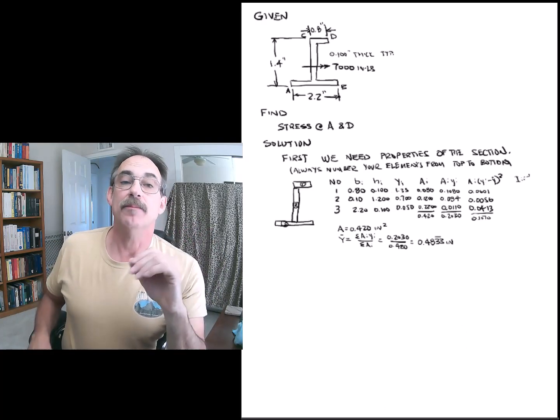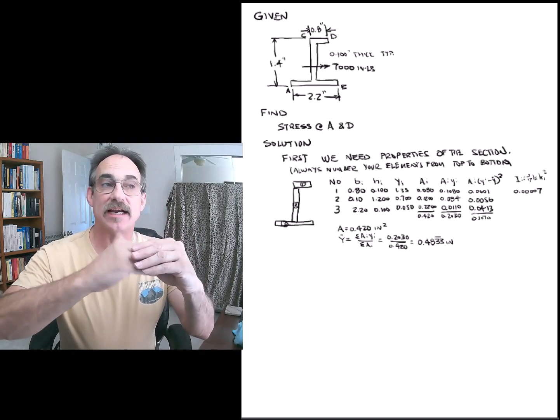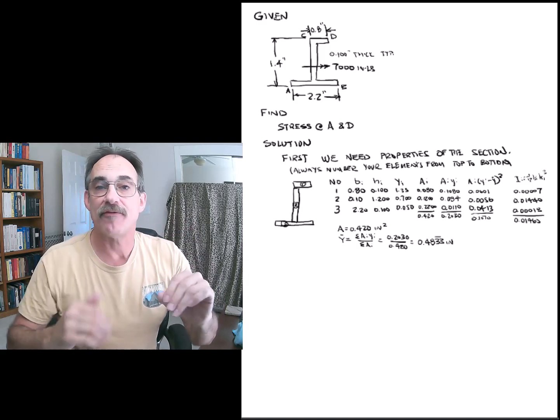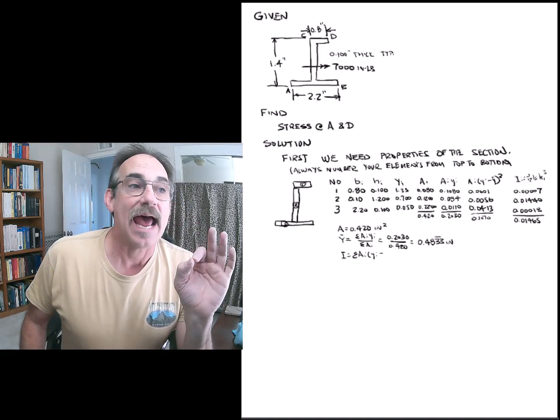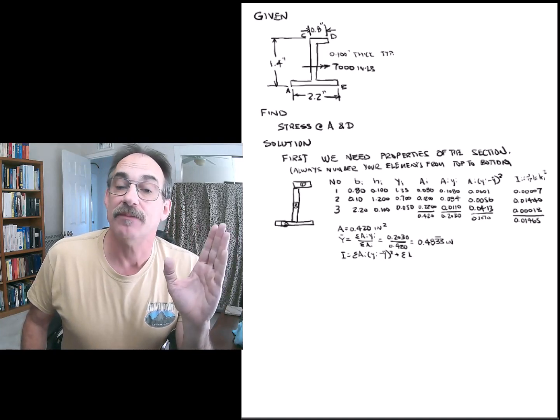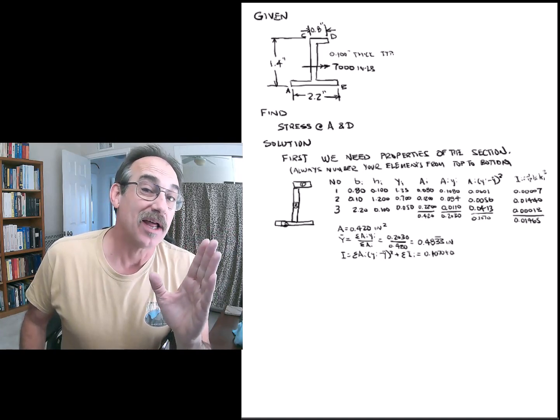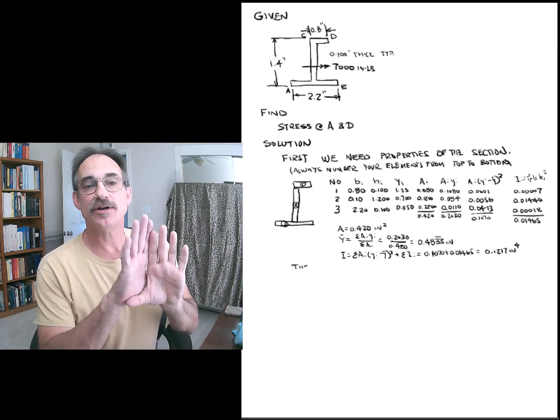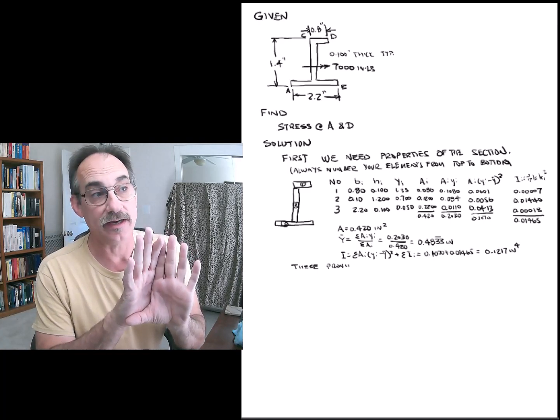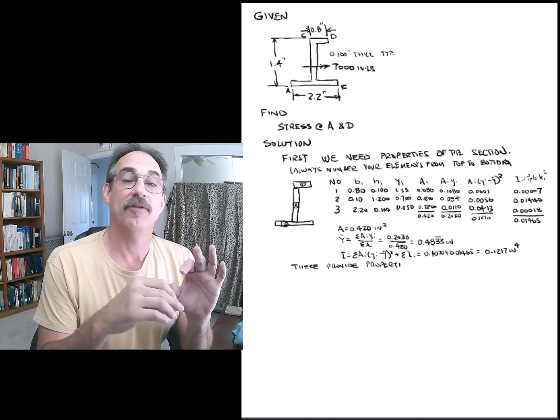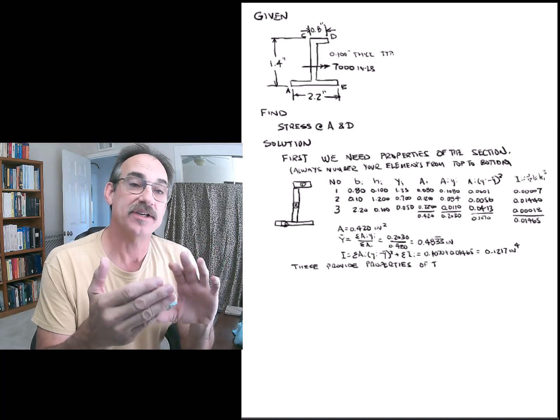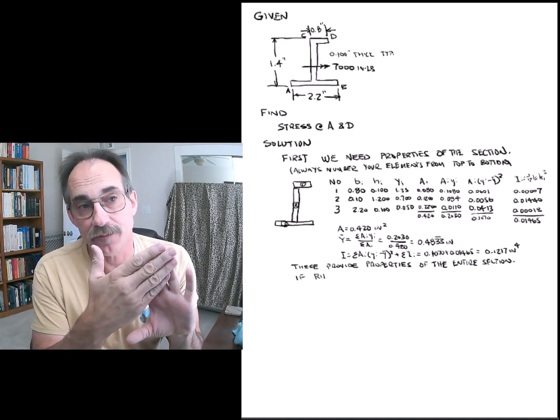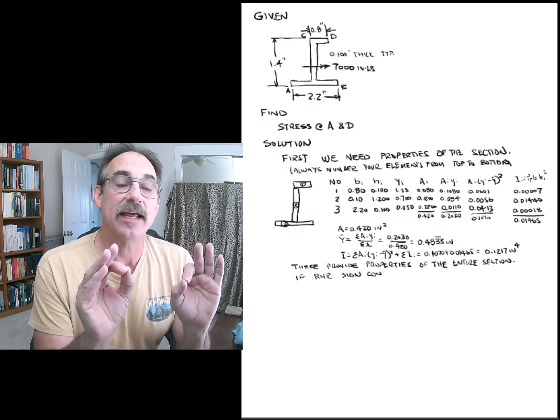We then calculate the moment of inertia of each little element about its own axis, which means element 1, 1/12 B H cubed, and do that for each of the others. We sum that column. We add up the summation of the A times Y minus Y bar squares, plus the sum of the I's, and that's the total moment of inertia of the entire section about its centroid. This is the key thing that we need for doing our analysis. This is the area of the whole section, the Y bar of the whole section, and the I of the whole section, and we need these to calculate our stresses.